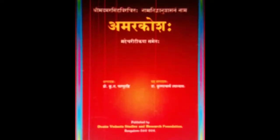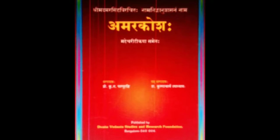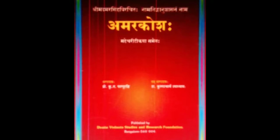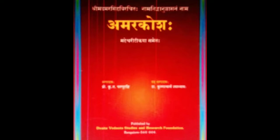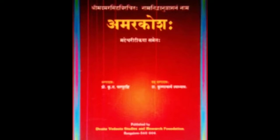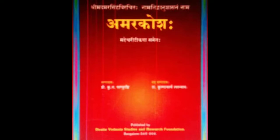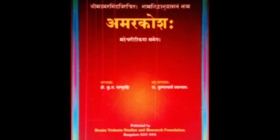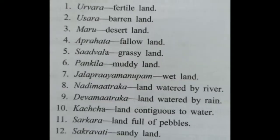Under Amarkosha, land was grouped according to fertility, physical composition, and situation into 12 land types, which will be shown in a picture.